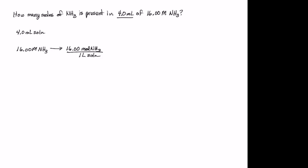When beginning a stoichiometric calculation, if possible, I always try to begin with something that has only 1 unit associated with it. So I'll want to convert that 4.0 milliliters of solution into moles of NH3.